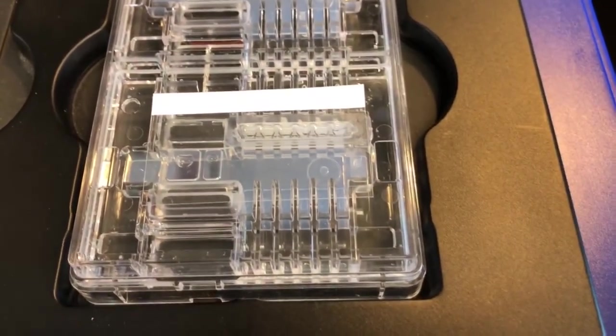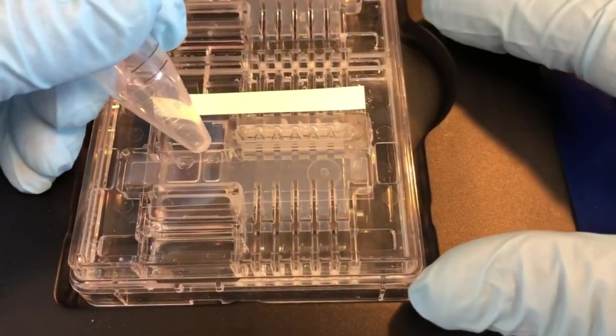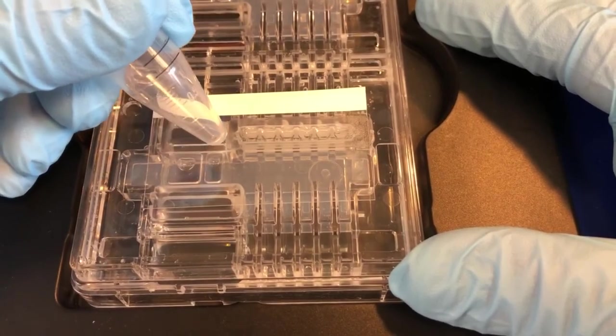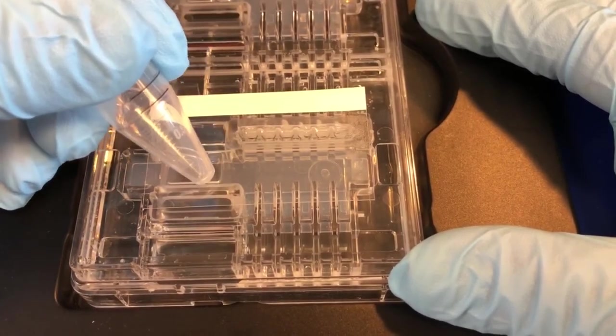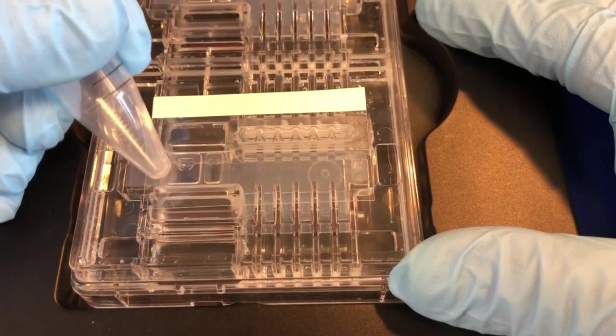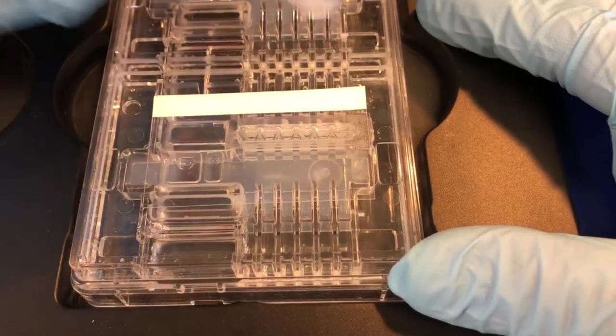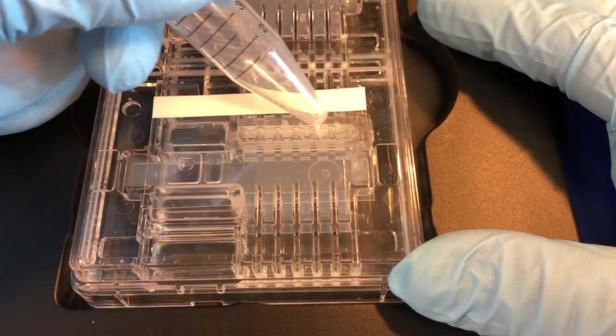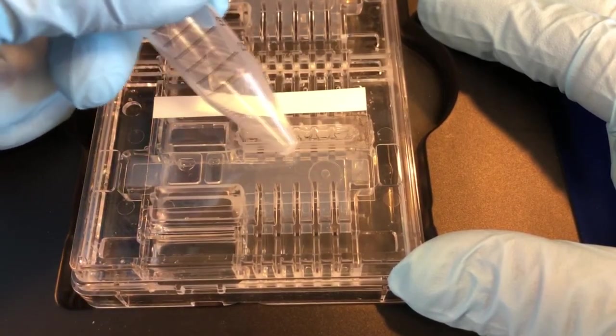Immediately after this, seal the borders of the reagent and sample wells using the bottom point of a 15 mm conical centrifuge tube. After sealing the reagent and sample well ports, outline the elution module ports with the 15 mm tube as well.